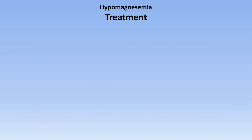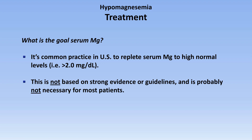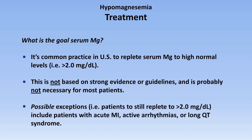A practical question that frequently comes up, and which is literally never mentioned in the literature, is what should the goal magnesium level be when undertaking repletion? In the US, at least, it's common practice to replete serum magnesium to high normal levels, that is, greater than 2.0 milligrams per deciliter. This practice is not based on strong evidence or guidelines and is probably not necessary for most patients. Possible exceptions - patients to still replete above 2 - include those with acute MIs, those with active arrhythmias, and those with long QT syndrome.